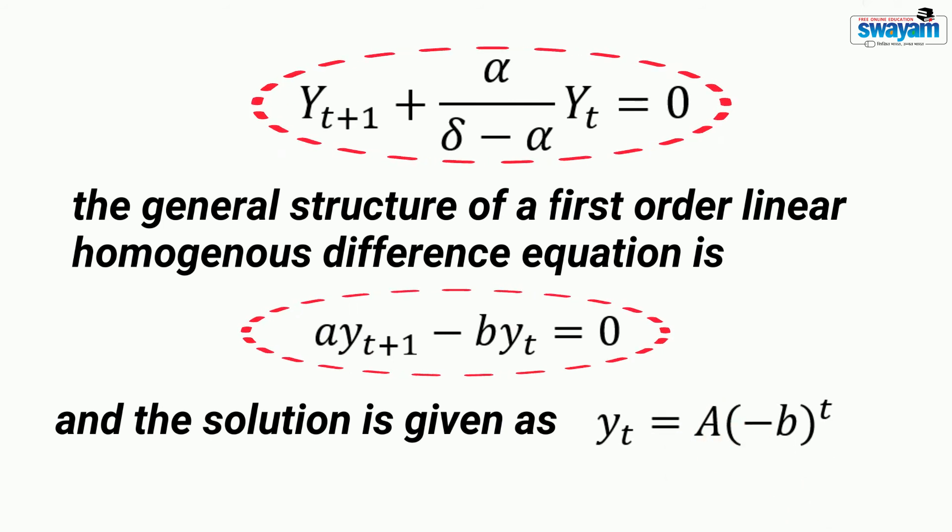Now, comparing with the general structure, the time path of income for the Harrod model is given like this.